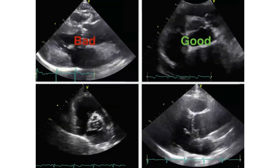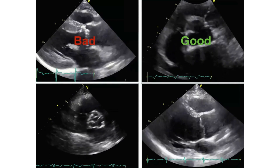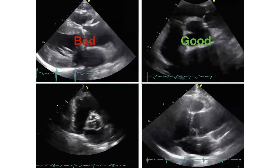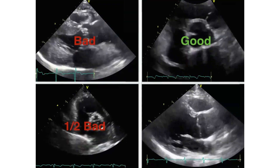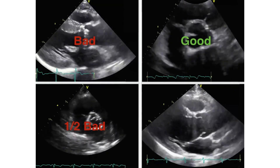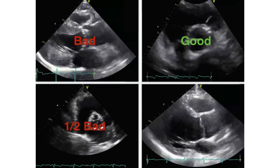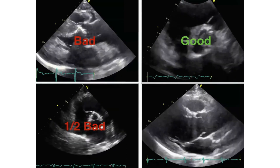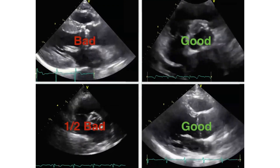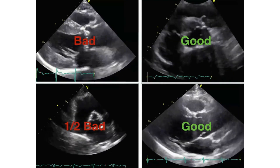The third one — I would say this is half bad, because it's calcified and it's a rigid valve, but it still opens. And the last one is a normal valve — we can say it's good.